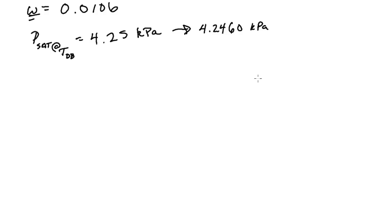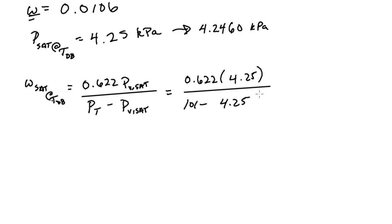As we did before with the wet bulb temperature, we can figure out the omega at saturation at the dry bulb temperature. That's the same formula: 0.622 times the vapor saturation at that temperature over the total pressure minus that same pressure. This is kilopascal again: 101 minus 4.25. If you calculate that out you will get something close to 0.0273.